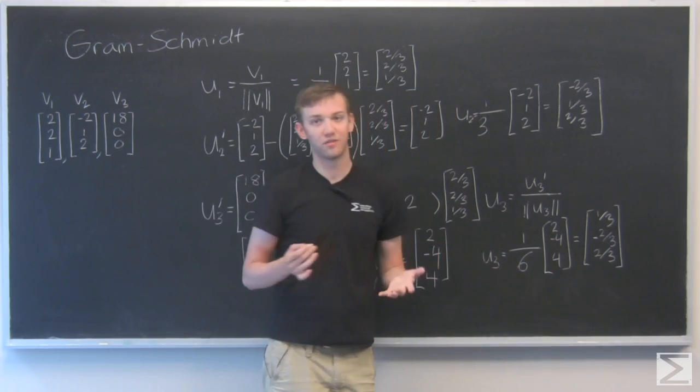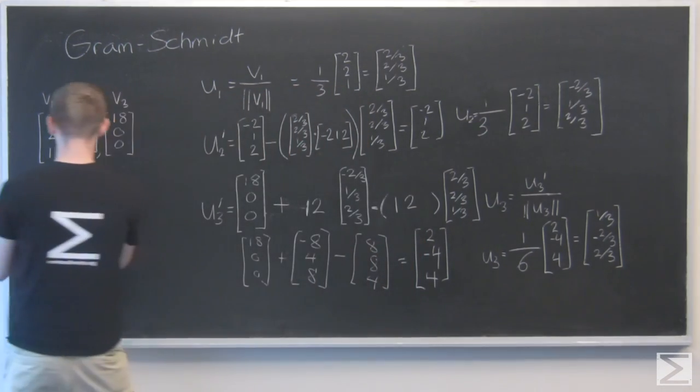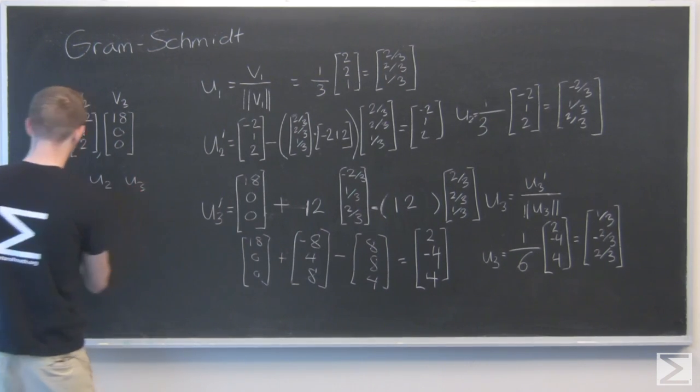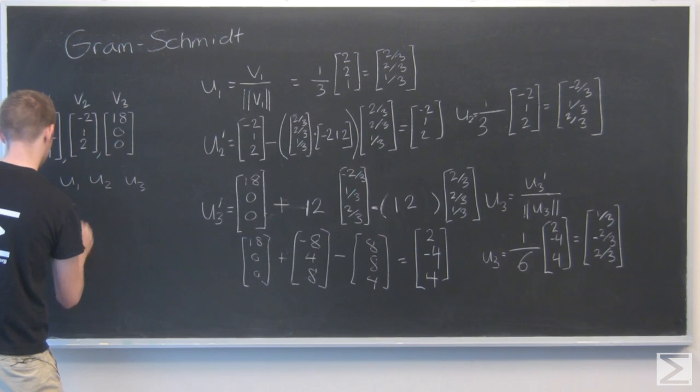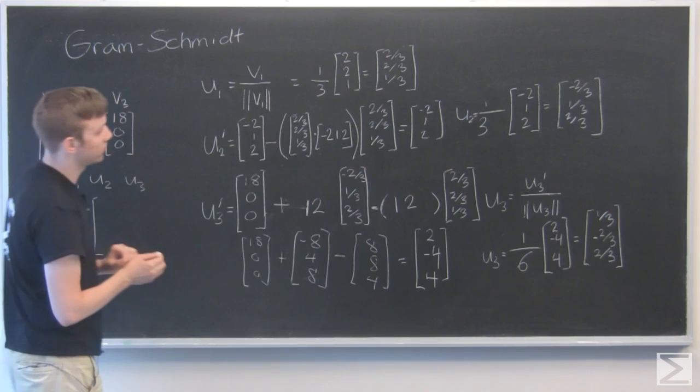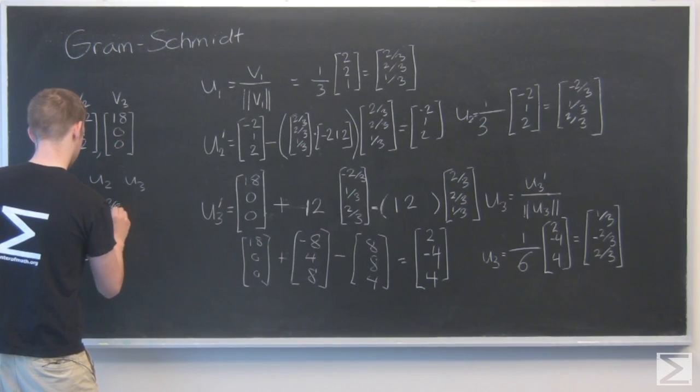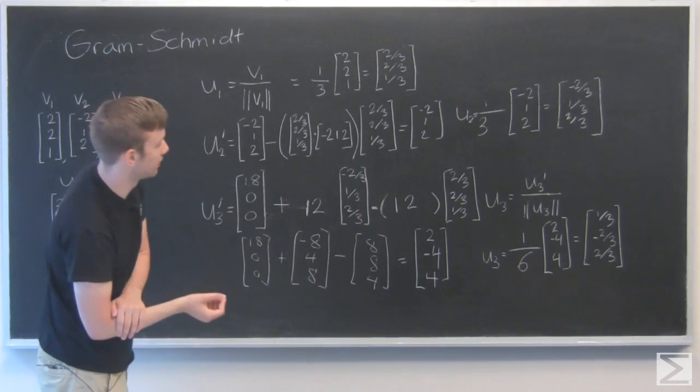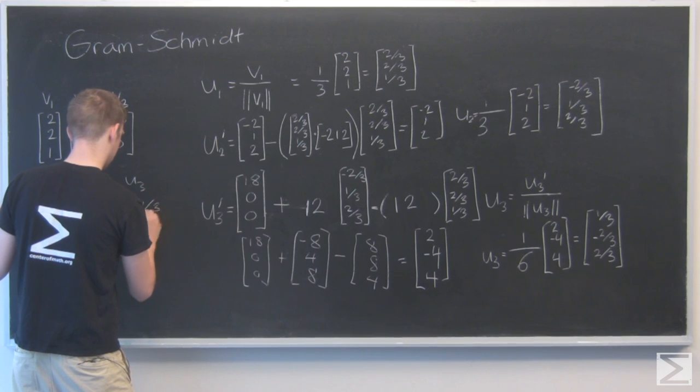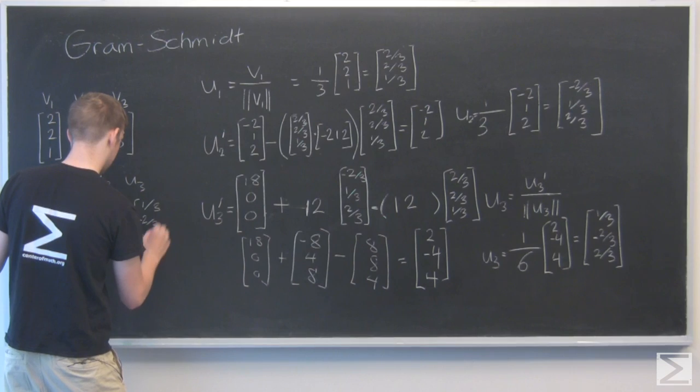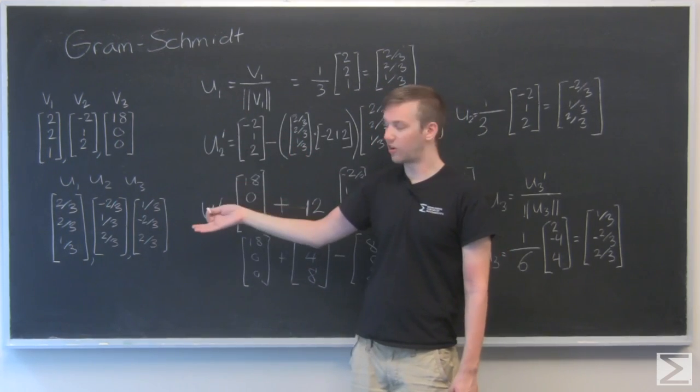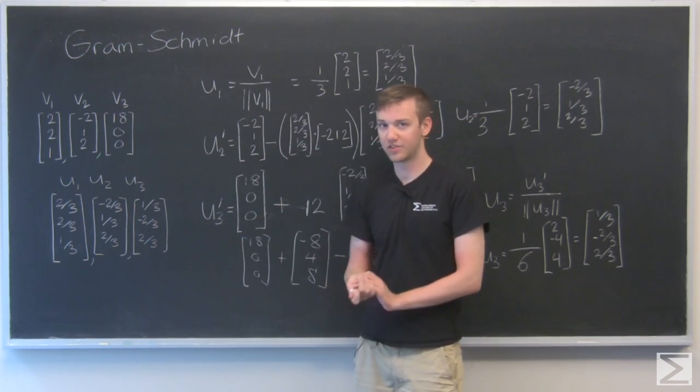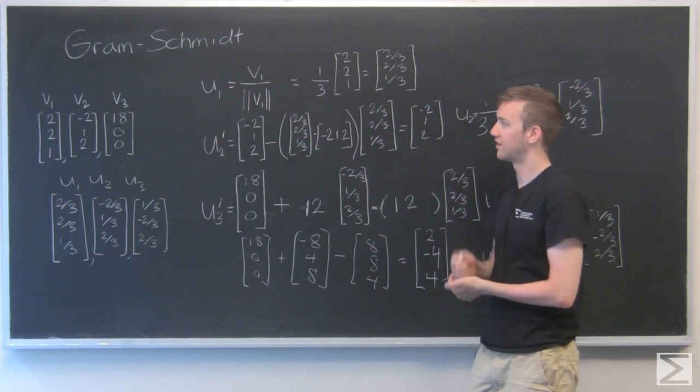I'm going to write it down here as U1, U2, and U3, just so you can see. U1 is 2 thirds, 2 thirds, 1 third. U2 is minus 2 thirds, 1 third, 2 thirds. And U3 is 1 third, minus 2 thirds, 2 thirds. Awesome. So here we have our translated version of V1, V2, and V3 into an orthonormal basis. They're all at right angles to each other. And they're all unit vectors as well. So that's all we have to do for that. This is the Gram-Schmidt process. I hope this example has been helpful for you. Check out other videos as well for more linear algebra stuff.